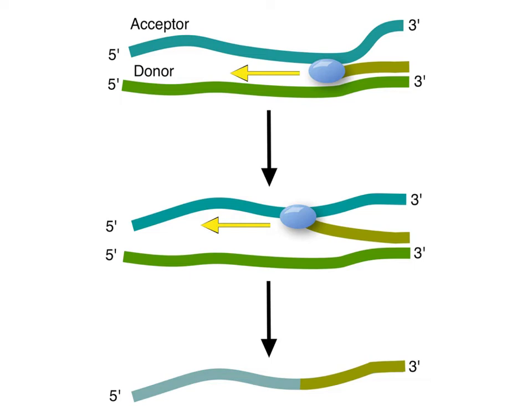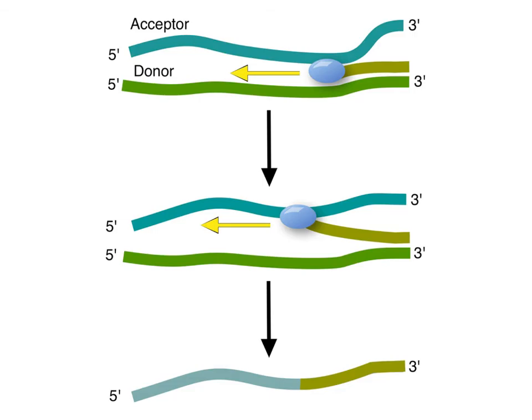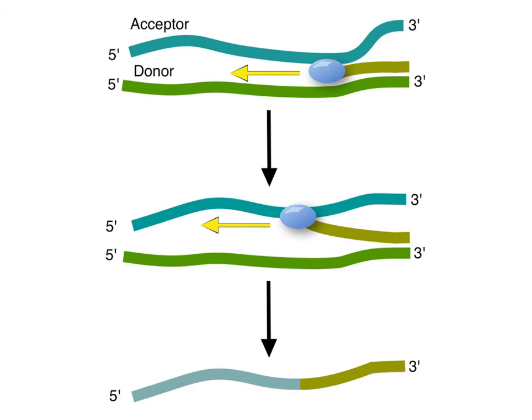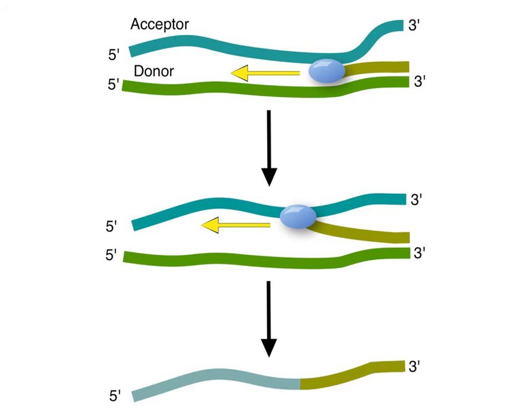Recombination happens when the polymerase decides to change templates. Here we have an RNA molecule in green being copied by a polymerase. These reactions occur on the surface of membranes, so there are lots of RNA molecules in one very small area. The polymerase suddenly switches to another template entirely — the blue one — producing a recombinant RNA molecule. This happens with poliovirus and many other RNA viruses, and is another source of diversity during RNA replication.